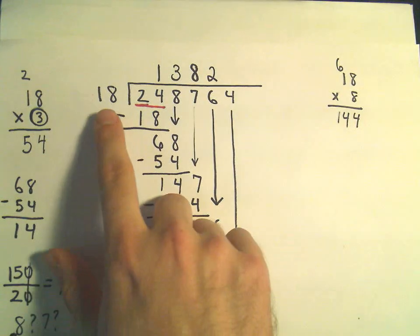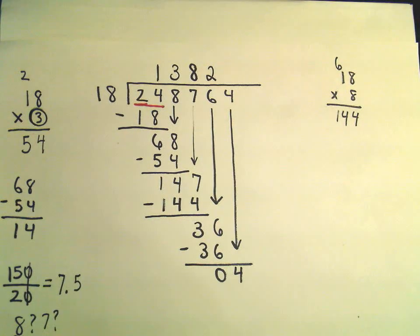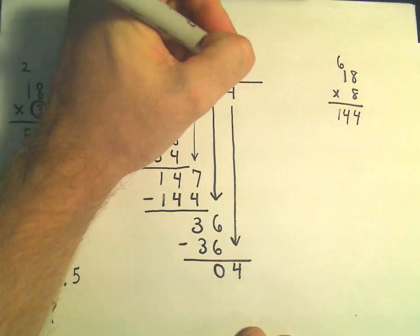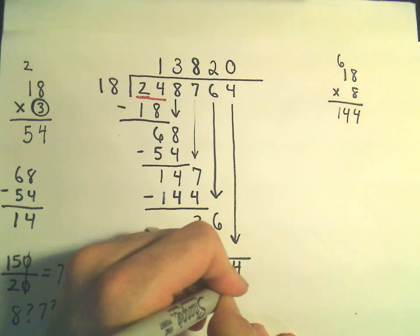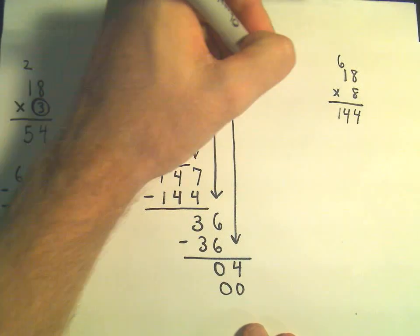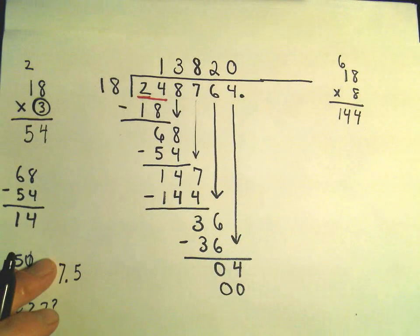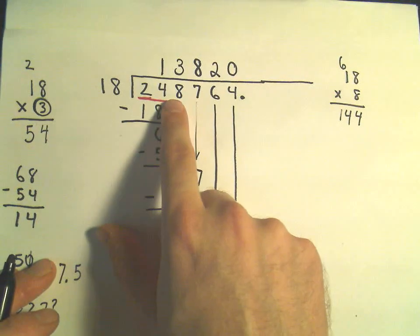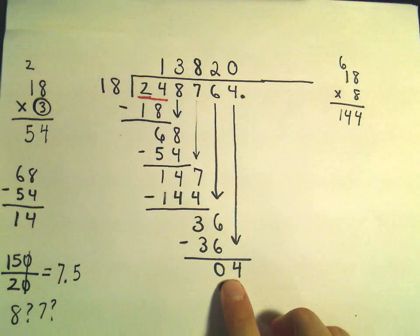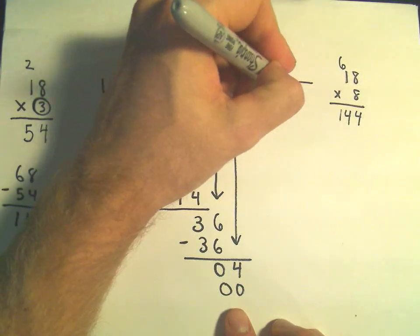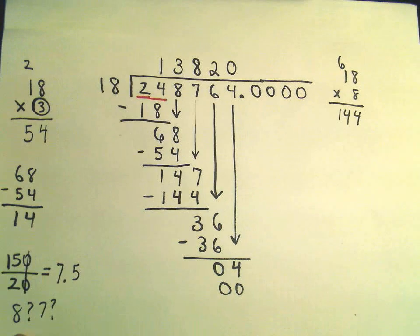Well, does 18 go into the number 4? Definitely not. So I'm going to stick my 0 there. 0 times 18 is going to be 0. And this is where I'm going to... So originally, we were dividing by 248,764. Since we still have a remainder, and we're converting to a decimal, I'm just going to put a few more 0s over here.